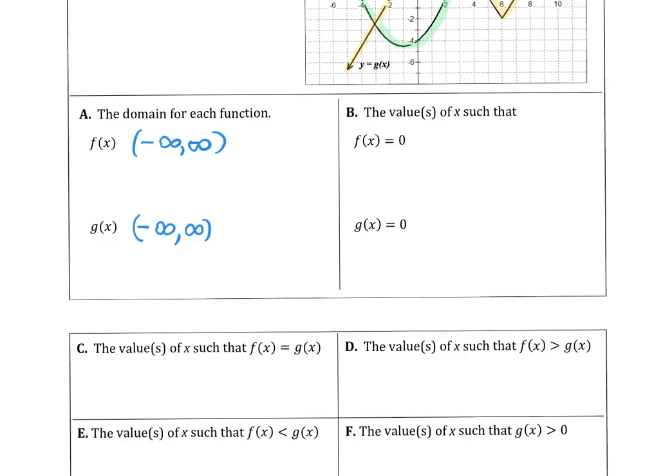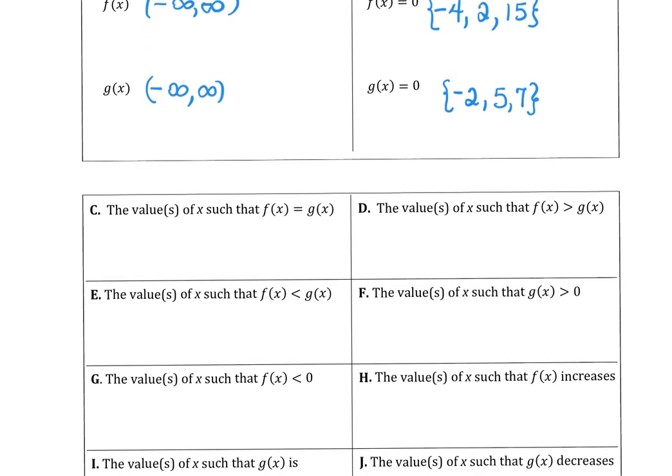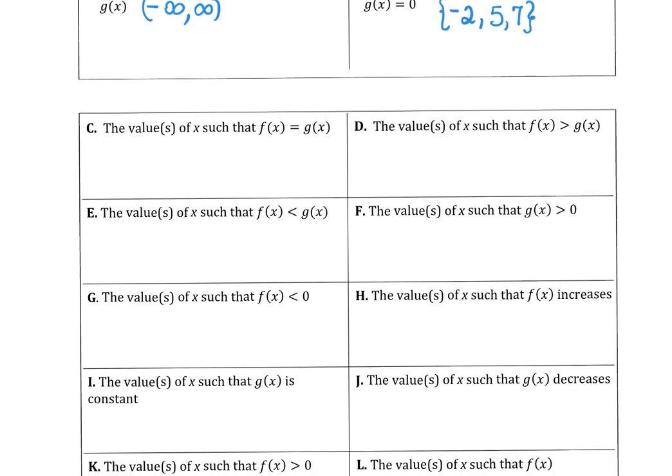The value where f of x is 0, those are our x-intercepts. They happen at negative 4, 2, and then I had to extend that line to figure out that the third zero would happen at 15. And on the g of x graph, we had x-intercepts or solutions at negative 2, 5, and 7. In part c, the values where f and g were equal to each other happened at negative 3, positive 3, and 9.